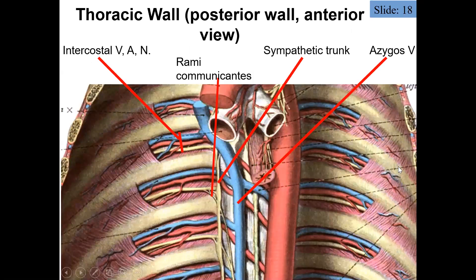Let's look at vascular structures associated with the thoracic wall. In this view of the posterior thoracic wall, we can see the vertebral column, esophagus, primary bronchi, and parts of the descending aorta. In between each of the ribs we find three neurovascular structures: the intercostal vein (closest to the inferior border of the rib), the intercostal artery, and the intercostal nerve — in that order: vein, artery, nerve.